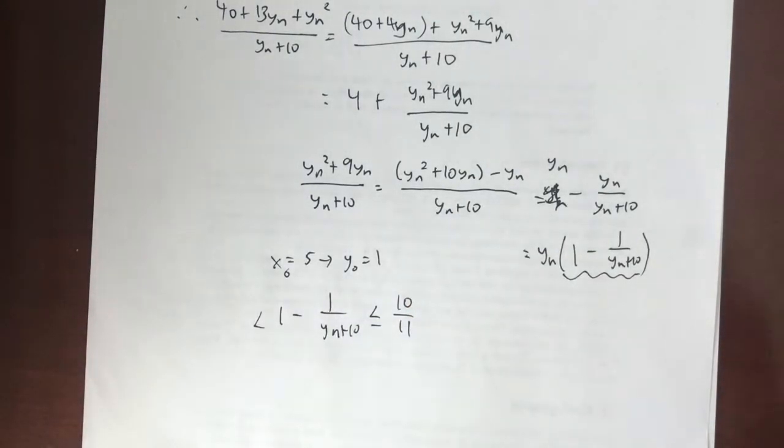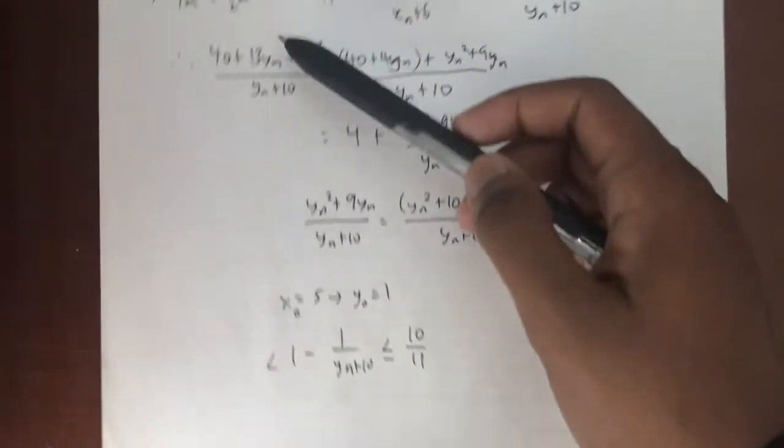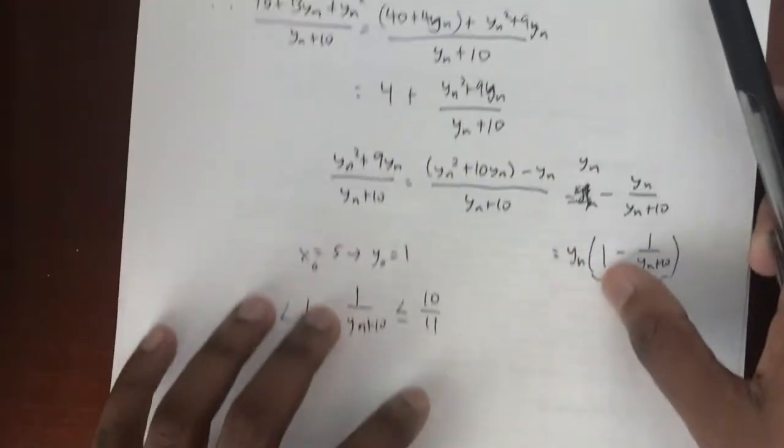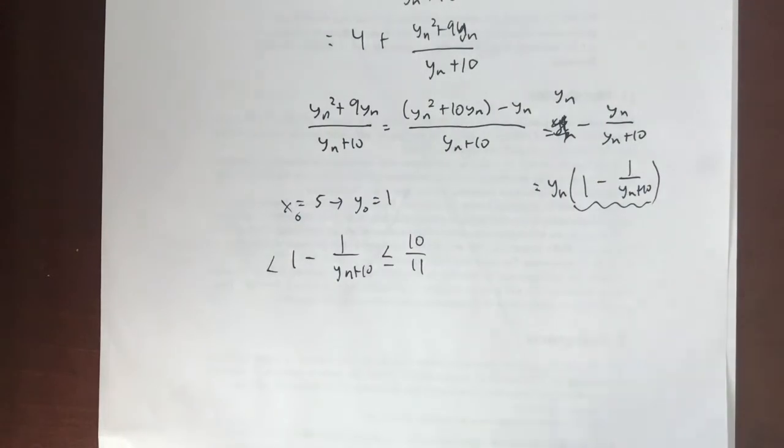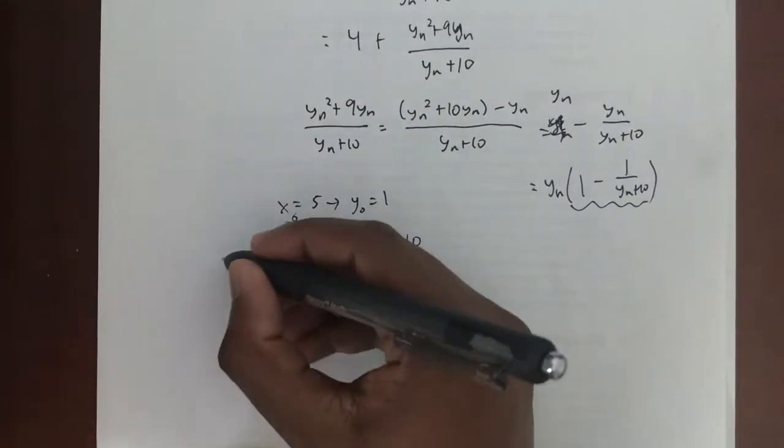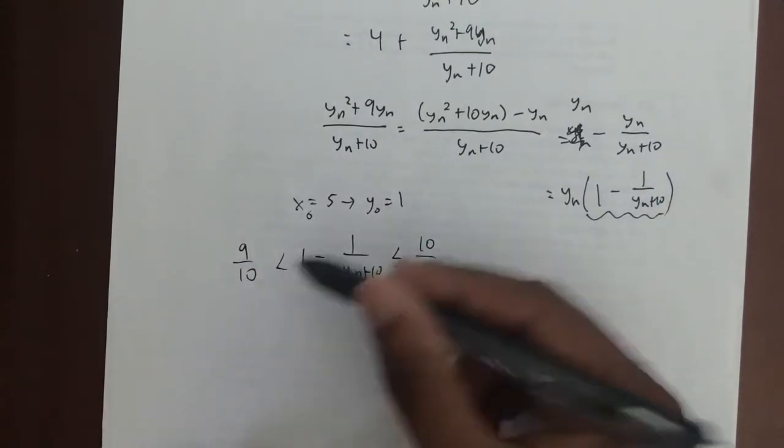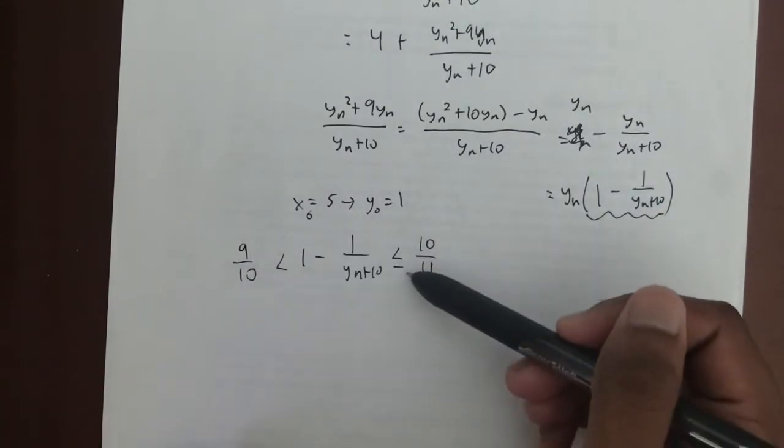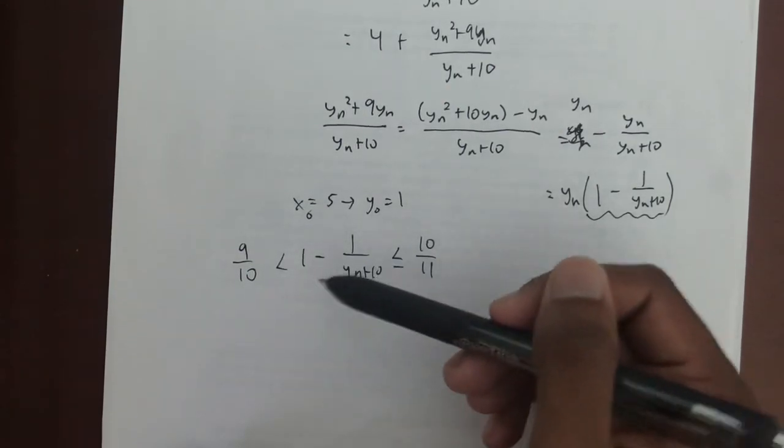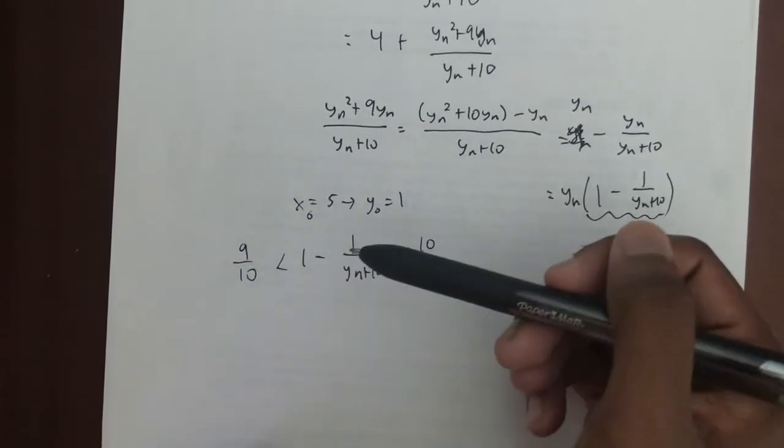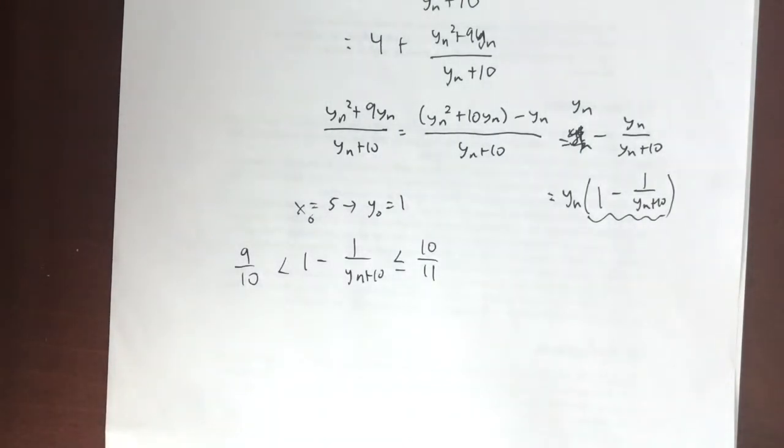And then logically, it's going to get smaller and smaller to the point where y_n is going to be so small that it's going to be negligible and relatively close to 0. Because it's never going to be negative, because this expression doesn't allow for any negative values to happen. So if y_n gets so close to 0, that means the smallest value we can ever have is 9/10, because y_n will be 0 and 1 - 1/10 is 9/10. But note this is less than and not less than or equal to because this value is never truly attainable.